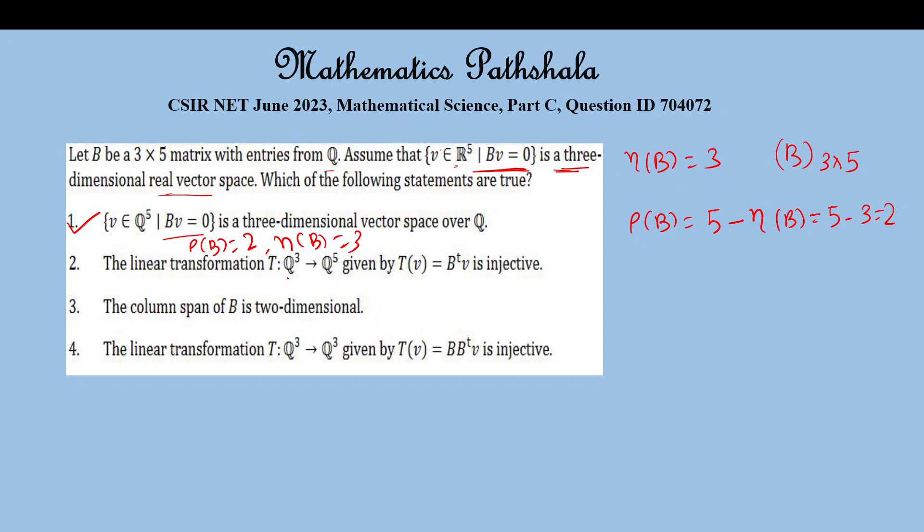The linear transformation T from Q3 to Q5 given by T(v) equals B transpose v is injective. Injective implies kernel of T equals zero. Now the nullity of B transpose, the rank of B transpose equals 3 minus 2 equals 1.